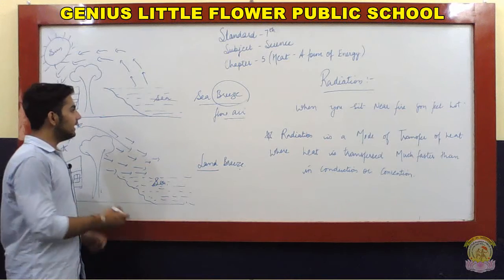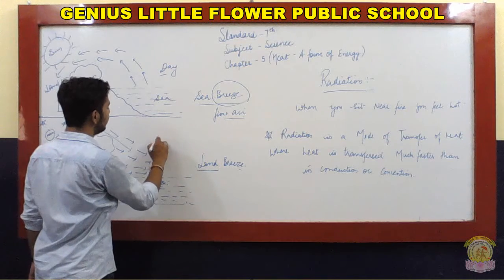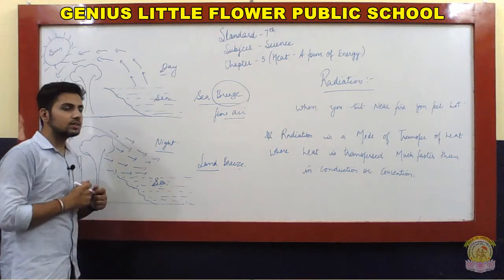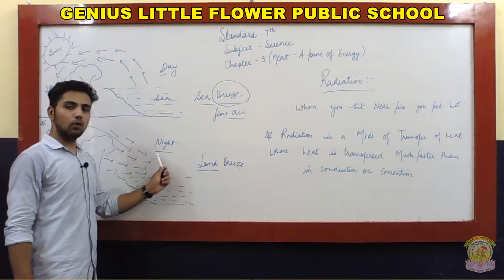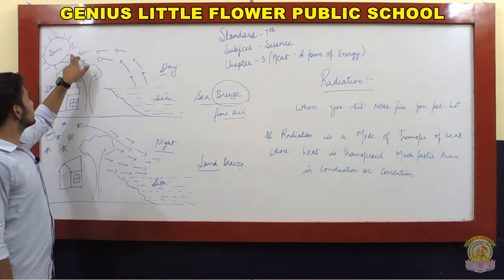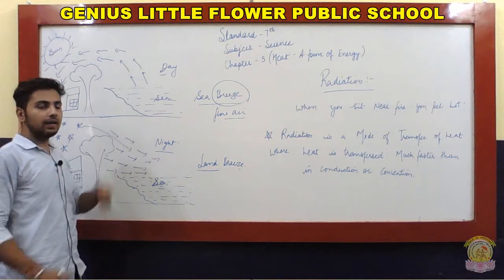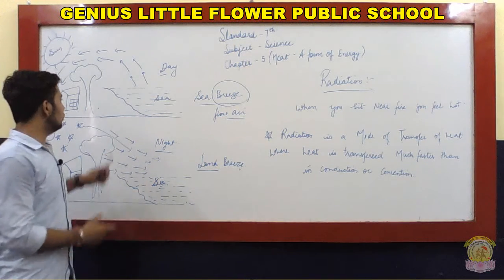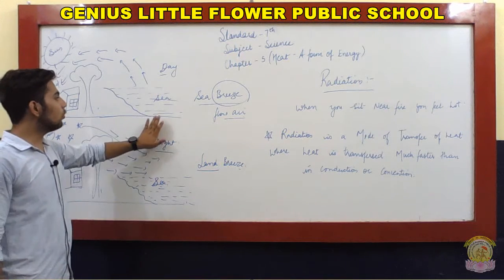There are two types of breeze: sea breeze flows in the daytime when the sun is out, and land breeze flows at night. During the day, the sun heats up both land and sea, but as we know, land gets heated more easily and quickly than water. So the temperature of land becomes higher than the temperature of the sea.